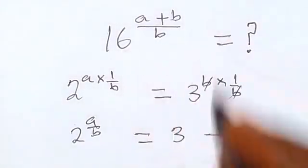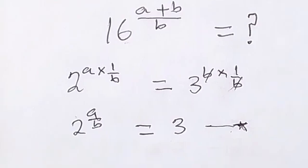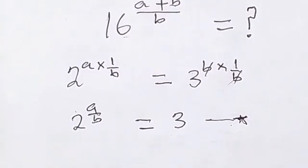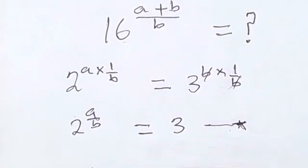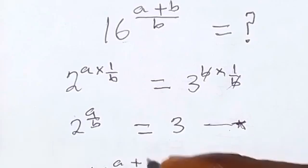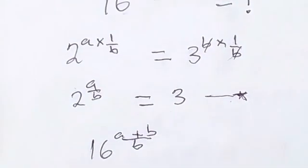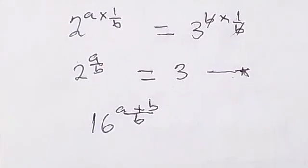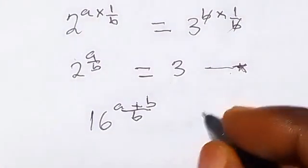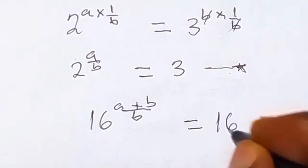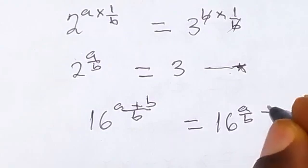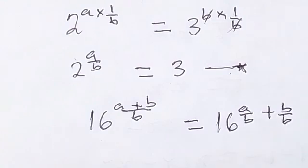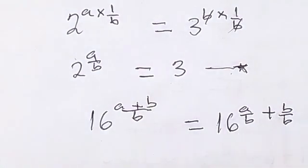Then we now want to evaluate 16 raised to power (a plus b) divided by b. Now let's break this down. When we break it, we can see that this can be written as 16 raised to power (a over b plus b over b). So when we break that fraction there, you can see that we have that, and b over b is 1.